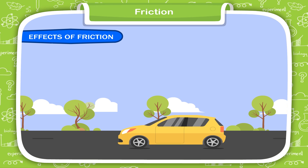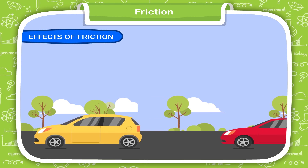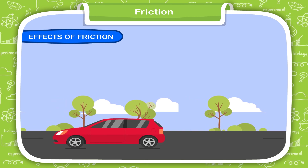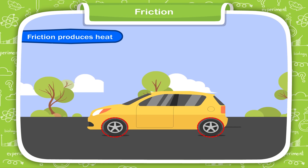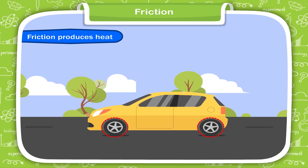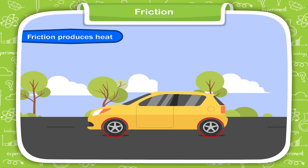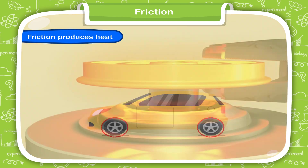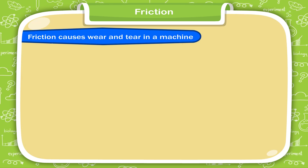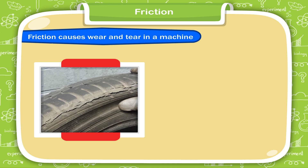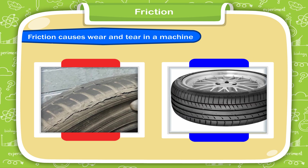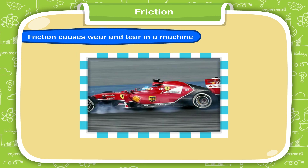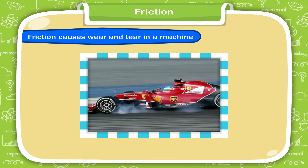Effects of Friction. When the surface of a body moves over that of another body, the friction between them shows these effects. Friction produces heat — frictional force converts mechanical energy into heat energy. For example, moving parts of a machine become hot. Friction also causes wear and tear in a machine. If we compare old car tires with new car tires, we will find that the old ones are worn out. This is due to the friction between the ground and the car tires.